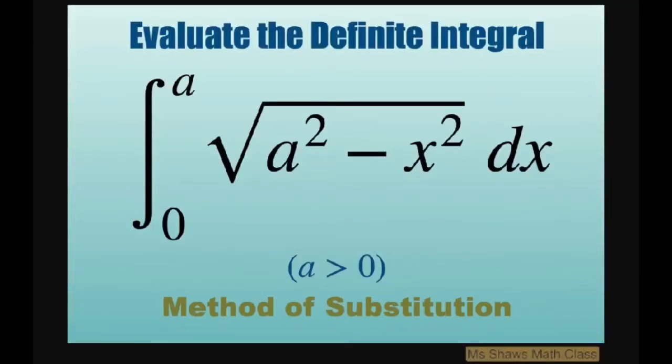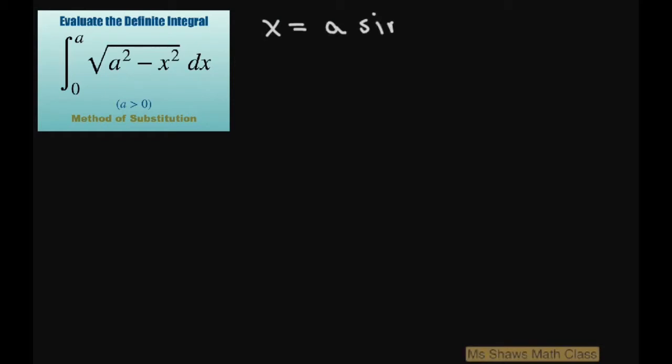Hi everyone. We're going to evaluate the definite integral from zero to A of square root of A squared minus X squared, DX. A has to be positive and we're going to use the method of substitution. We'll let X equal A sine of theta, which will help us integrate what we have here.